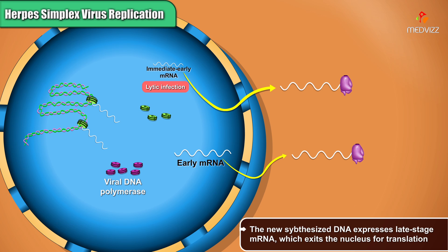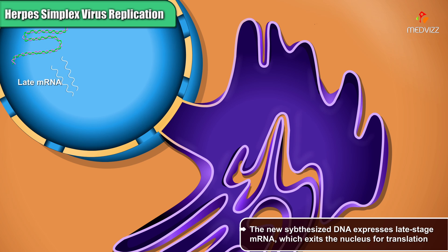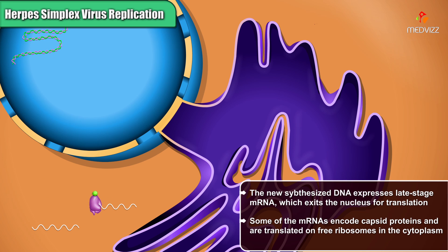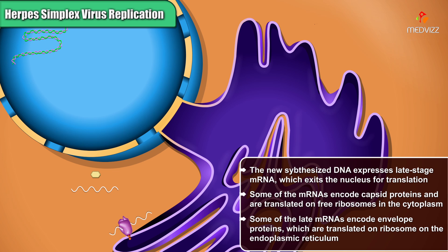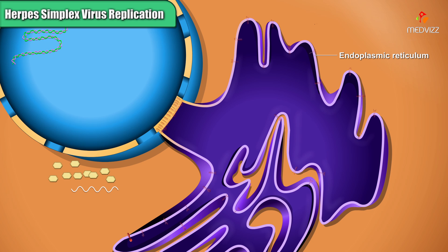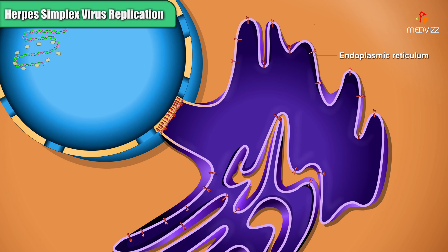The newly synthesized DNA expresses late-stage mRNA, which exits the nucleus for translation. Some of the mRNAs encode capsid proteins and are translated on free ribosomes in the cytoplasm. Some of the late mRNAs encode envelope proteins, which are translated on ribosomes on the endoplasmic reticulum. Many late-stage proteins re-enter the nucleus to form capsids, and these capsids capture DNA genomes.